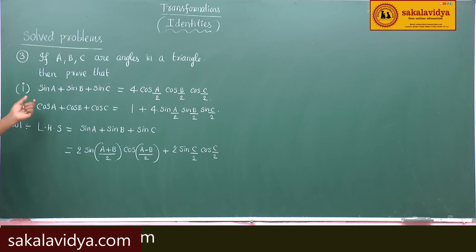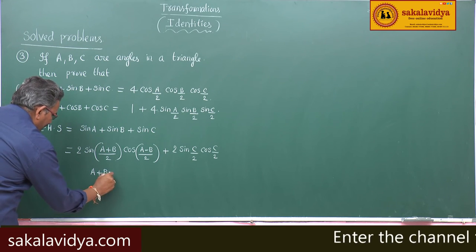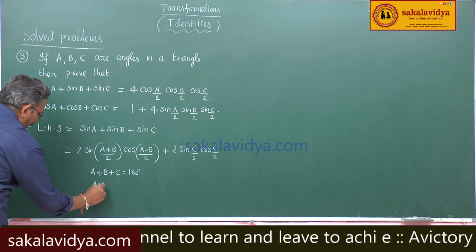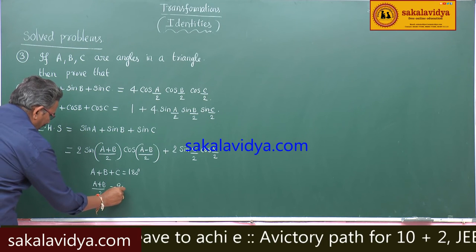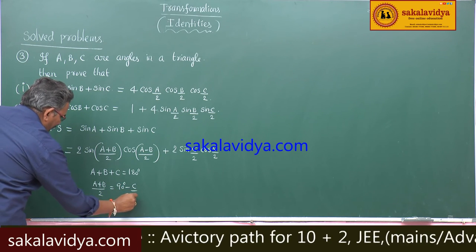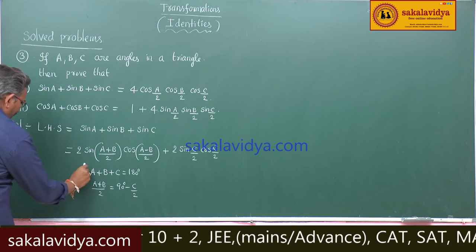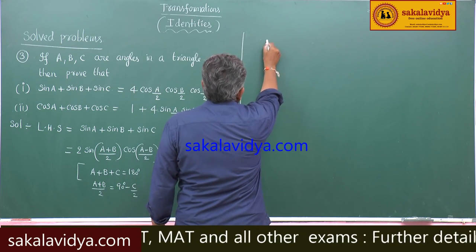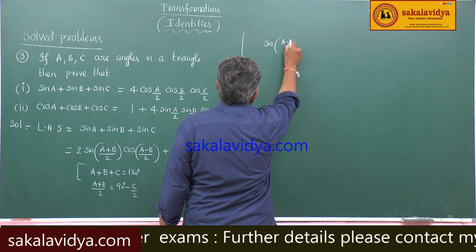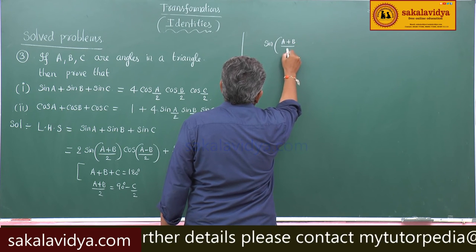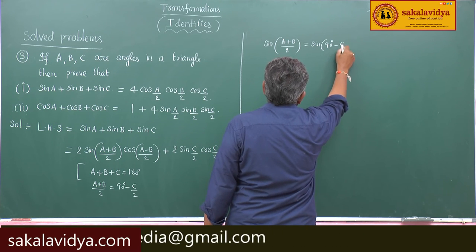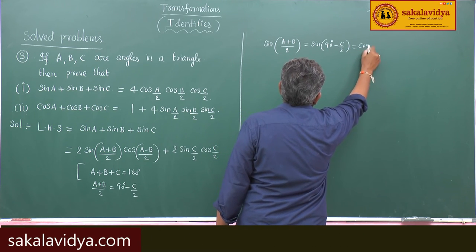Now, being a triangle, A + B + C = 180°. Dividing both sides by 2 gives (A+B)/2 = 90° − C/2. Applying sin: sin((A+B)/2) = sin(90° − C/2) = cos(C/2).